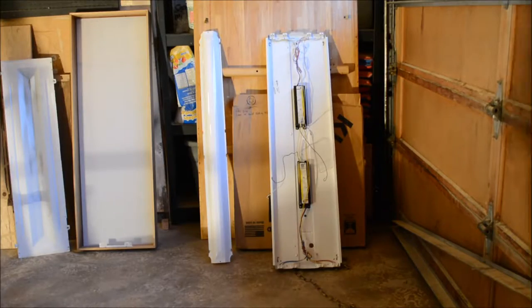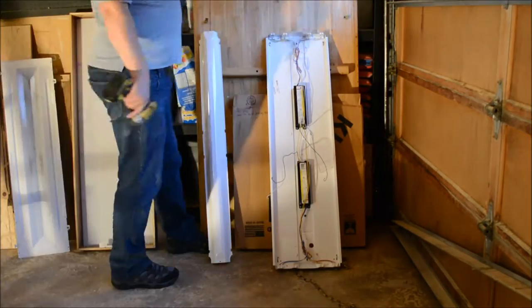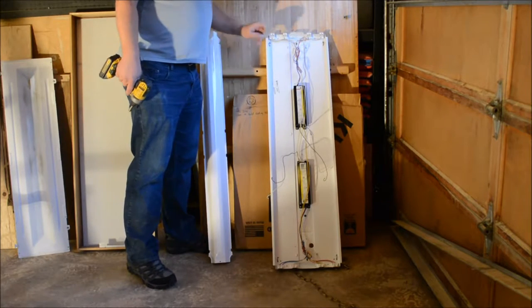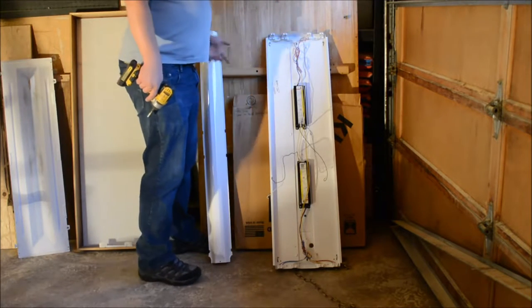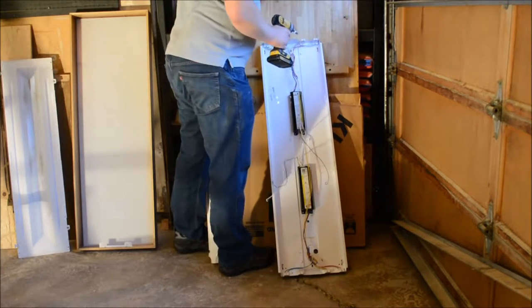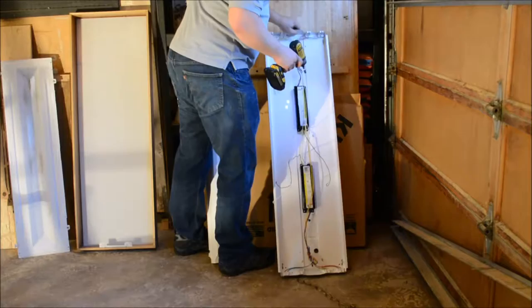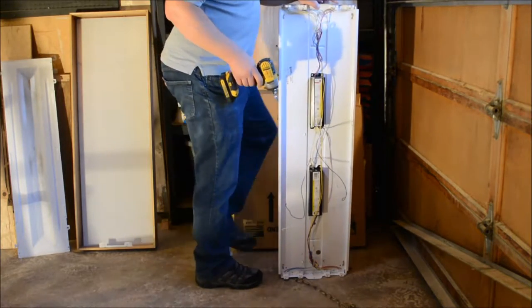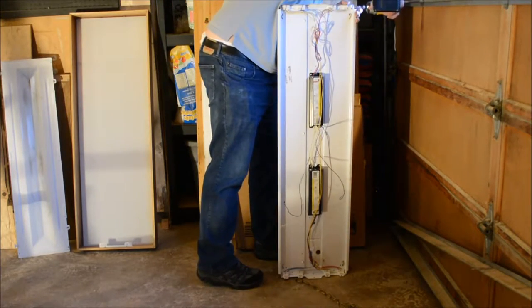The quickest way to use a ballast like this, these T12s require so much wiring, is just to leave the wiring alone. Take apart the fixture and get access to these things which are the lighting fixtures or sometimes called tombstones.